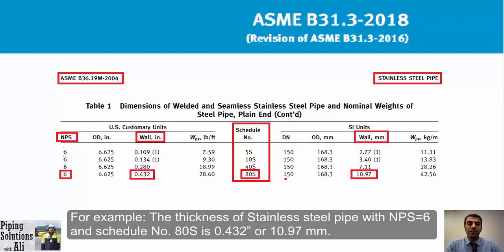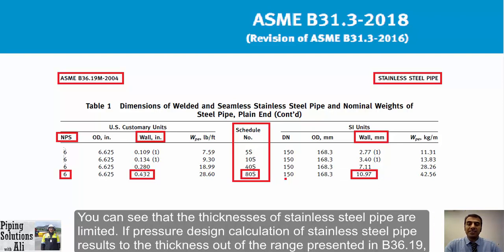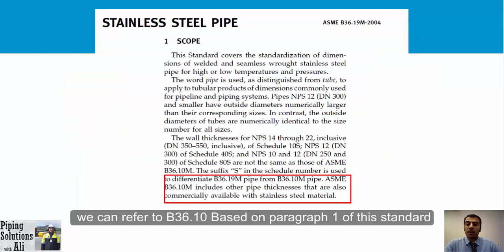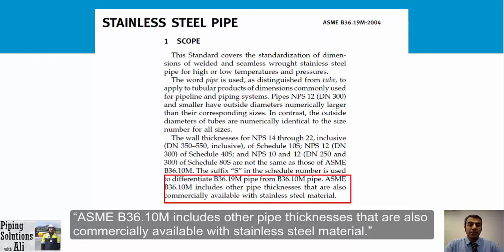If pressure design calculation for a stainless steel pipe results in a required thickness outside the range presented in B36.19, we can refer to ASME B36.10 instead. Based on Paragraph 1 of B36.10, that standard includes other pipe thicknesses that are also commercially available in stainless steel materials.